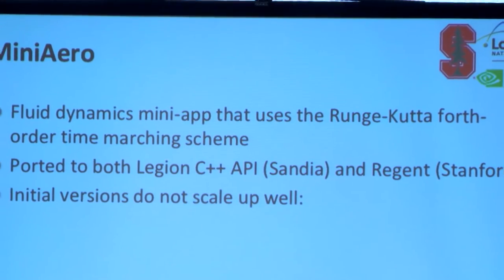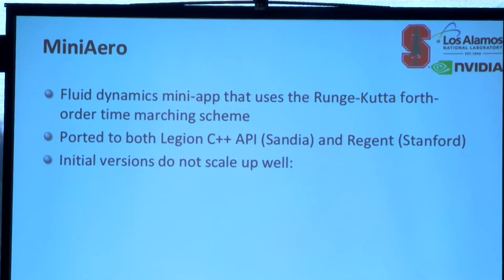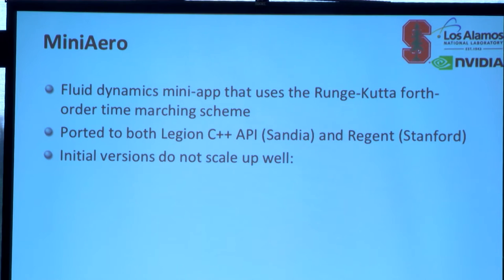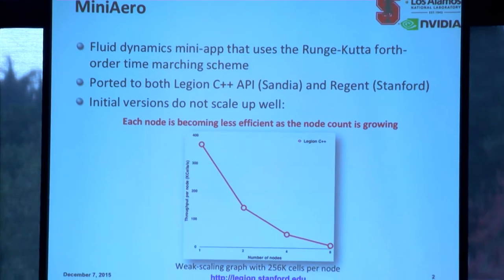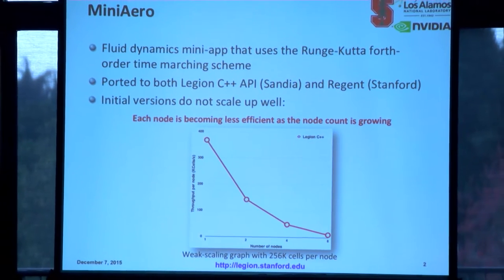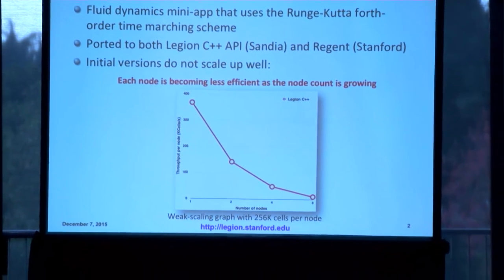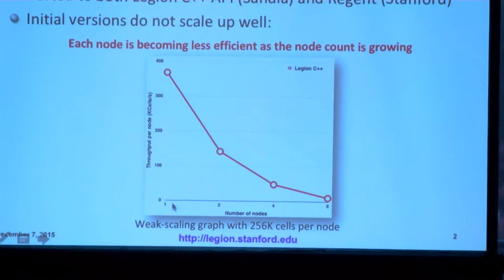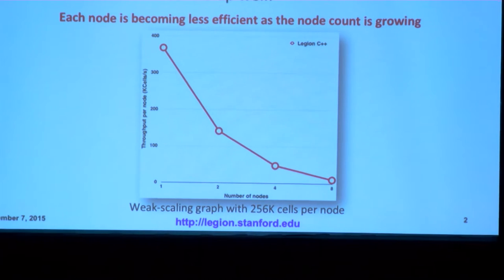MiniAero is a Fluid Dynamics mini-app that uses an RK4 scheme on a 3D mesh. It has been ported to both the Regent C++ API by Sandia people and also to Regent. Both versions perform quite well at small processor counts, but do not scale up well to multiple nodes. Here is a weak scaling graph from the C++ version of MiniAero showing per-node throughput for each node count. You can see that the efficiency of each node decreases much faster than the node count increases, so we want to figure out the issue and optimize it.